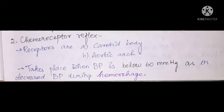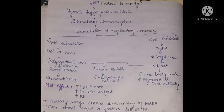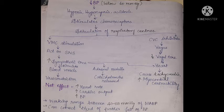Chemoreceptor reflex: the receptors are the carotid body and aortic body — the same locations as baroreceptors. This reflex activates when BP is very low, as in hemorrhage — below 60 mmHg. Low BP causes hypoxia (decreased oxygen), hypercapnia (increased CO2), and acidosis, which stimulate chemoreceptors. This stimulates respiratory centers and the vasomotor center while inhibiting the cardiovascular center. The net effect is increased heart rate, cardiac output, and blood pressure. Working range: 40 to 100 mmHg mean arterial BP, correcting up to two-thirds of further BP fall.